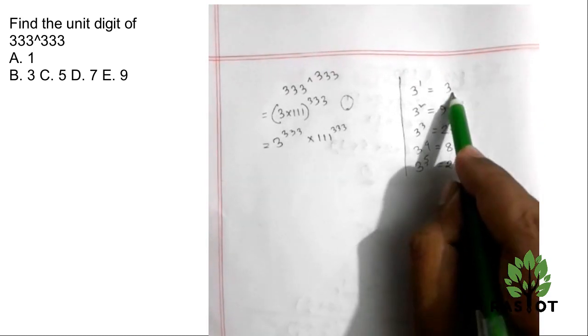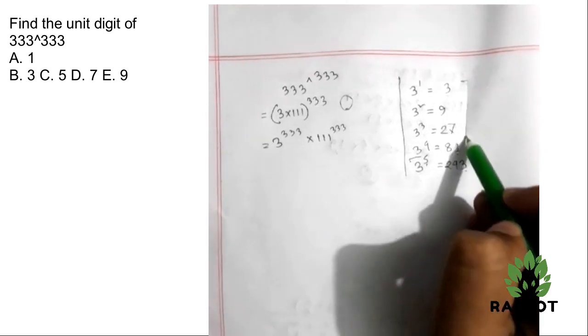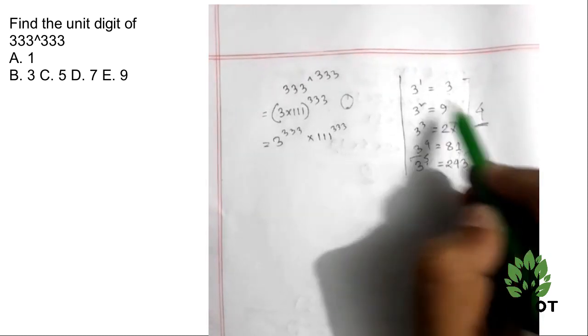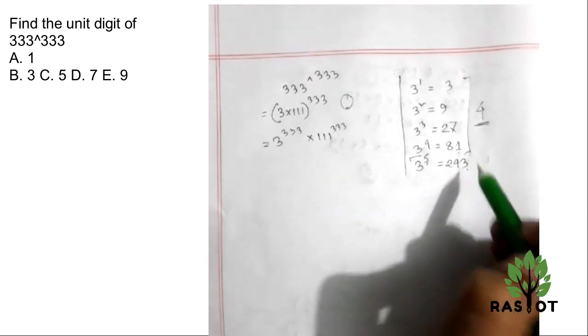The pattern goes 3, 9, 7, 1 repeating. The unit digits follow this four-power cycle.